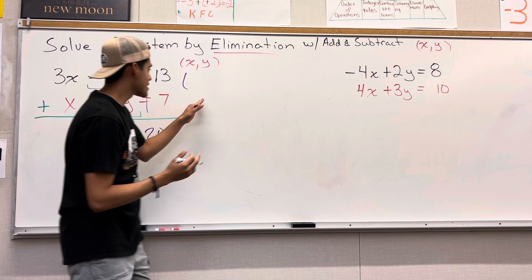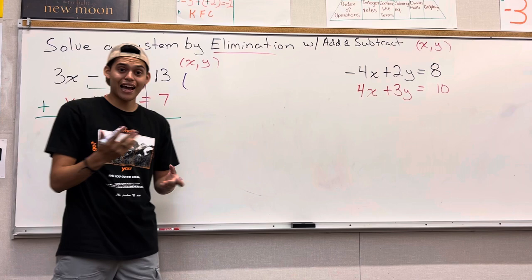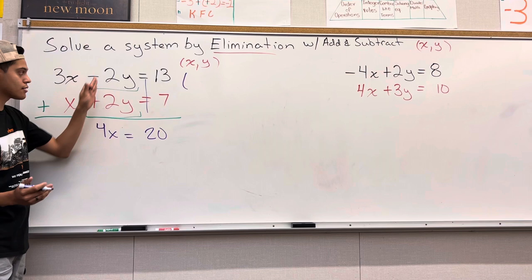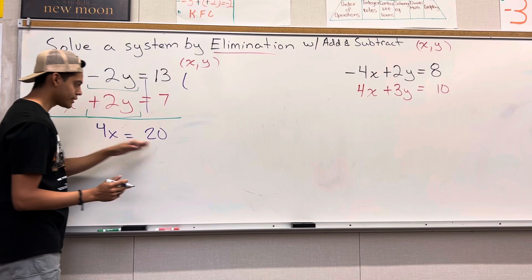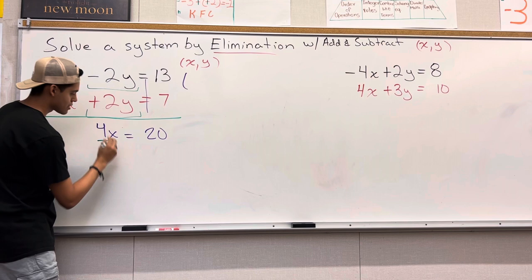So why we are doing this is because we want the coordinate where the two lines intersect. In this case, we are looking for the x because the y's cancel out. You could also have a situation where the x's cancel out, but in this case, it's the y. The y's are the opposite of each other, different signs. That's why the y's cancel out. Now, 4x equals 20.